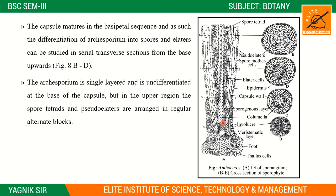The archesporium is a single undifferentiated layer at the base of the capsule. As you go upward from the base, there is one undifferentiated layer; differentiation occurs as development proceeds.